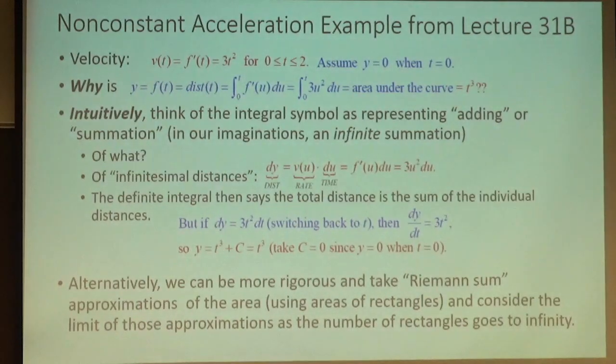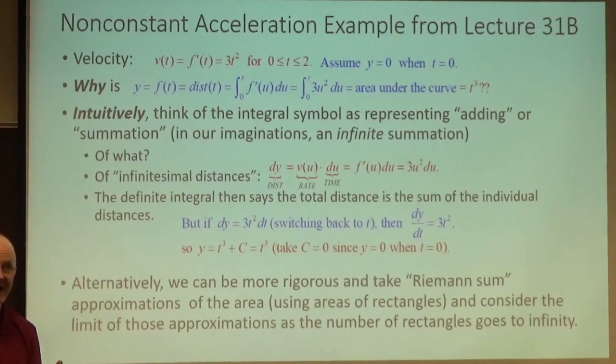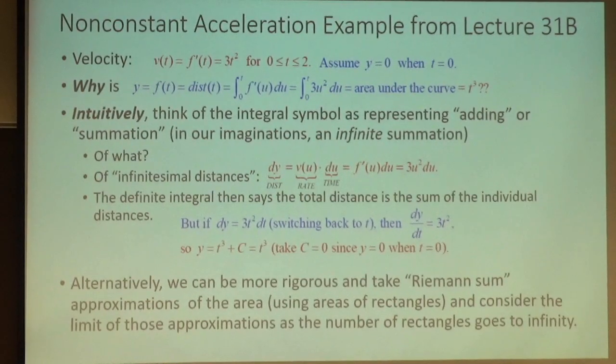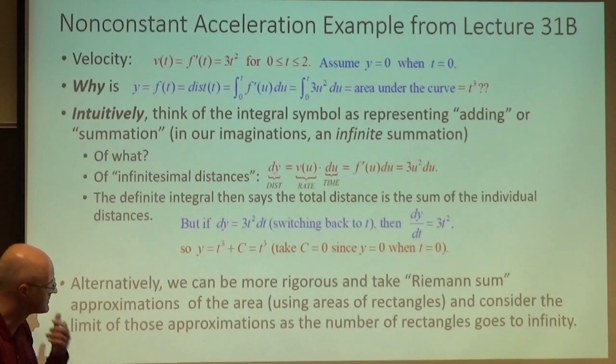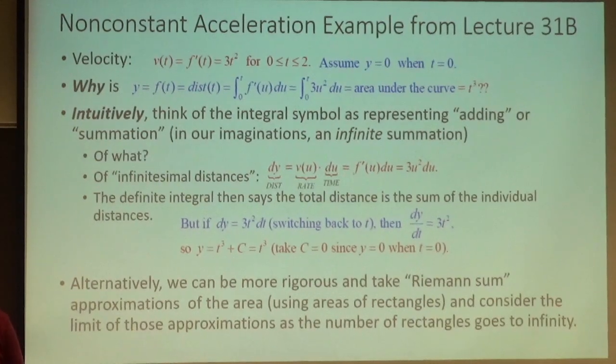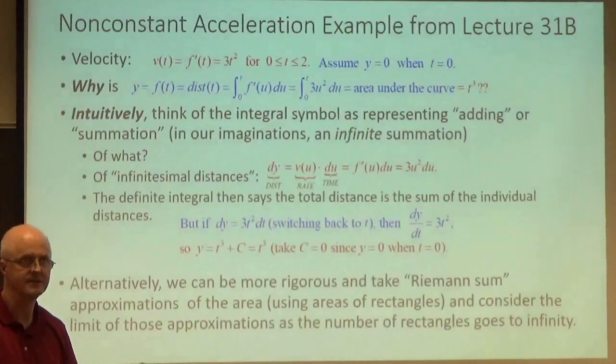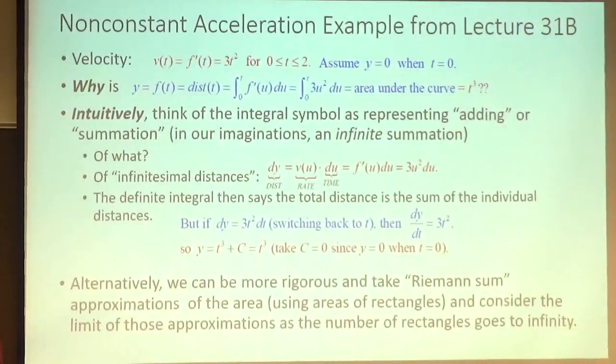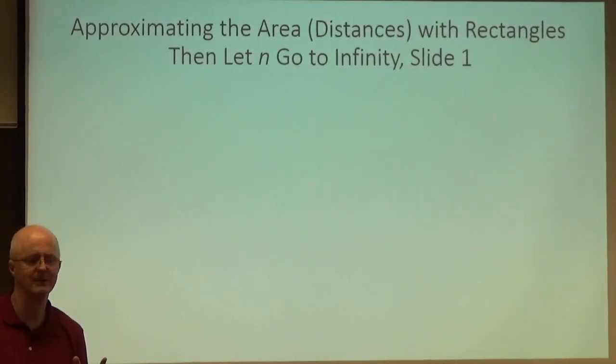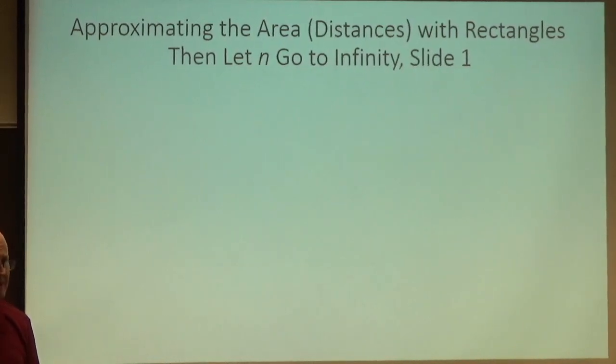Alternatively, to try to figure out why the answer is t cubed, we can be more rigorous and take what's called a Riemann sum approximation in the area. Which would also be an approximation of the distance traveled. Using areas of rectangles, like you saw in the 3 Blue and Brown video if you watched it, which you should have. You're really going to get a lot out of those if you watch them and think about them carefully. And then, to be sure what the answer is t cubed, we take a limit as those approximations, as the number of rectangles goes to infinity. So limits are involved, technically speaking. Integrals, just like derivatives, are based on limits.